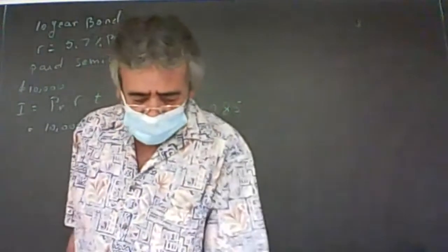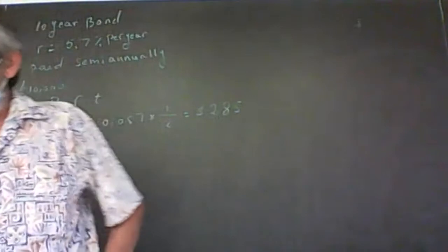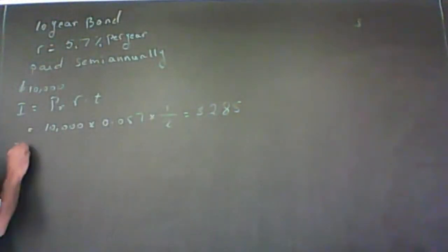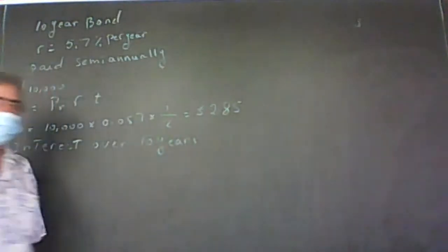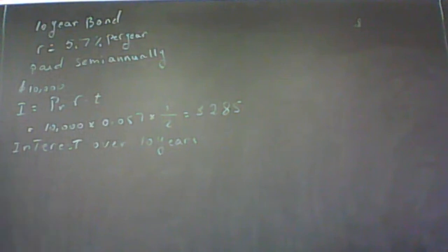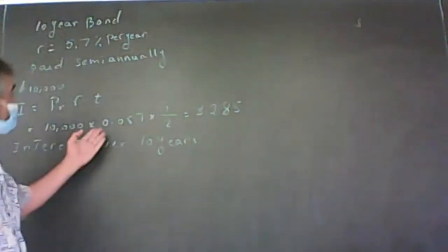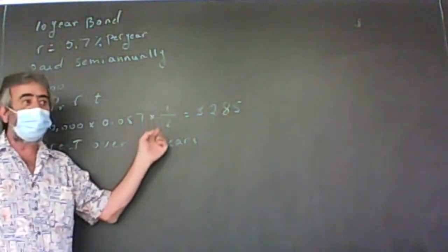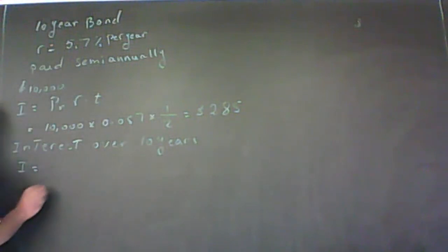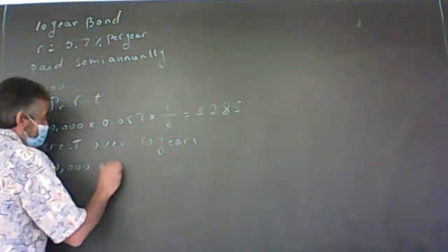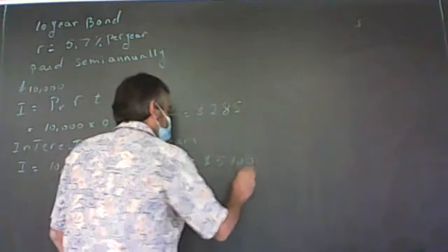Question two: determine how much interest he will earn over the 10-year life of the bond. We can solve this in several ways. One way is to use the formula again, but instead of 1/2, T is now 10 years. So I equals 10,000 times 0.057 times 10, and that gives you $5,700.